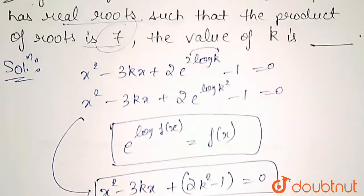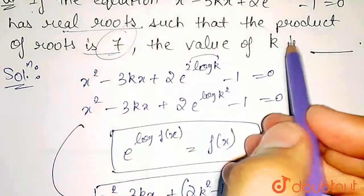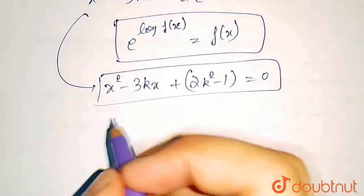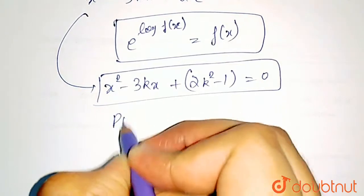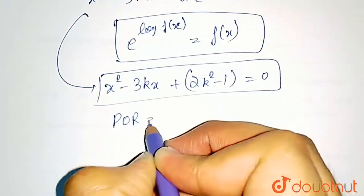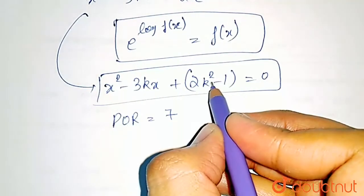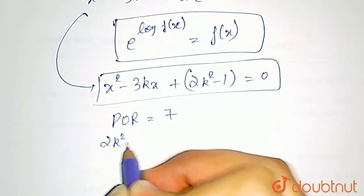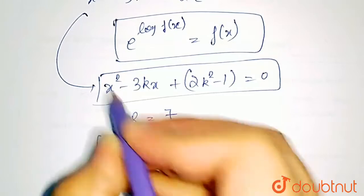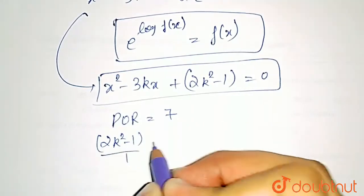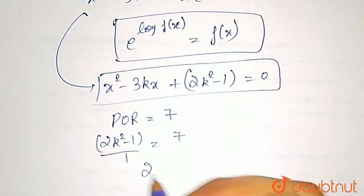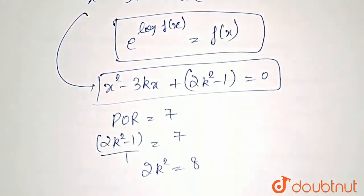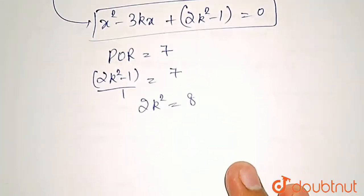It is given that the product of roots is 7. The product of roots equals c over a, which is k squared minus 1 divided by 1, and that equals 7. So 2k squared minus 1 equals 7, giving 2k squared equals 8, and therefore k squared equals 4.